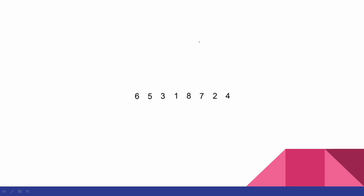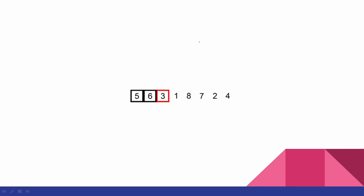Let's see an animation. First, we have 6. 5 is less than 6, so we move and set 5. Next, we have 3. 6 is greater than 3, 5 is greater than 3. We place 3 in position.